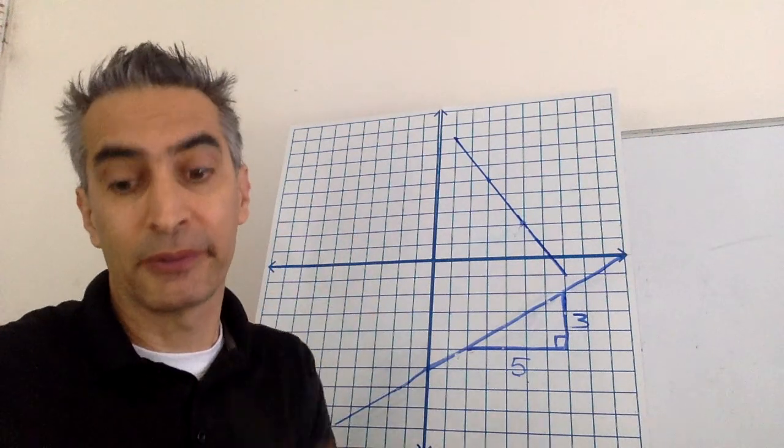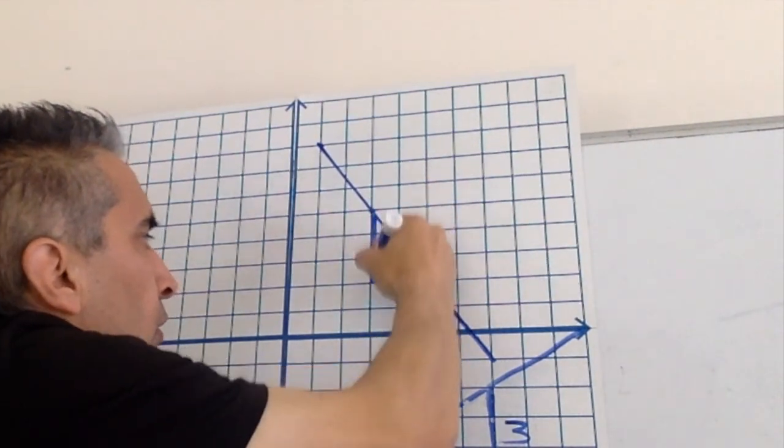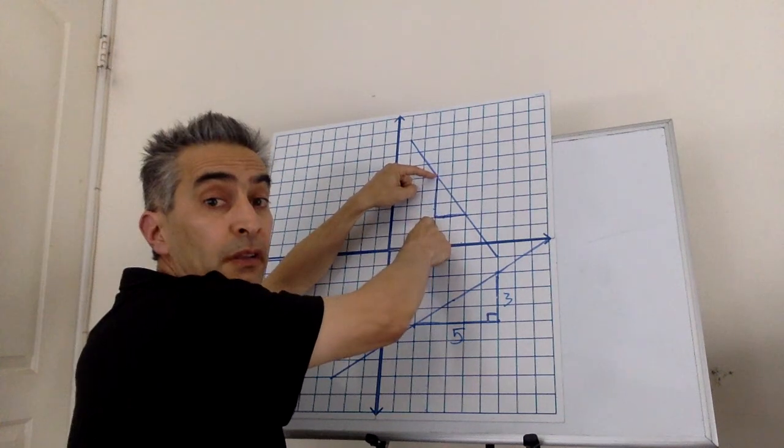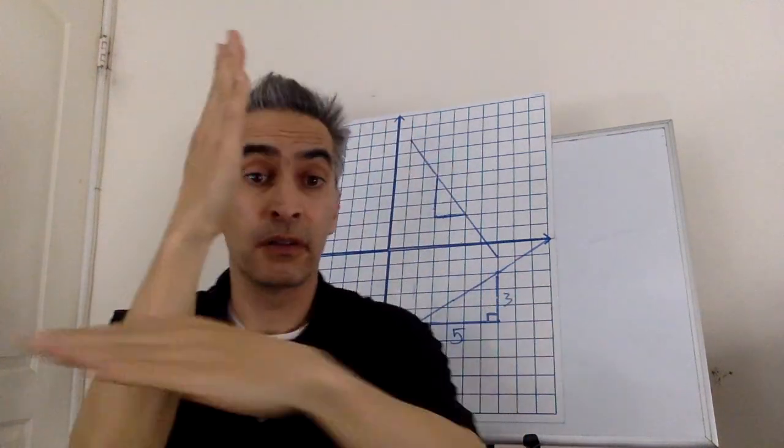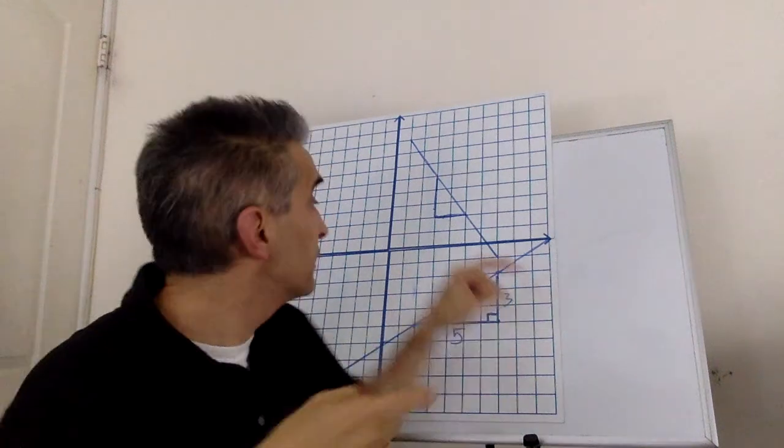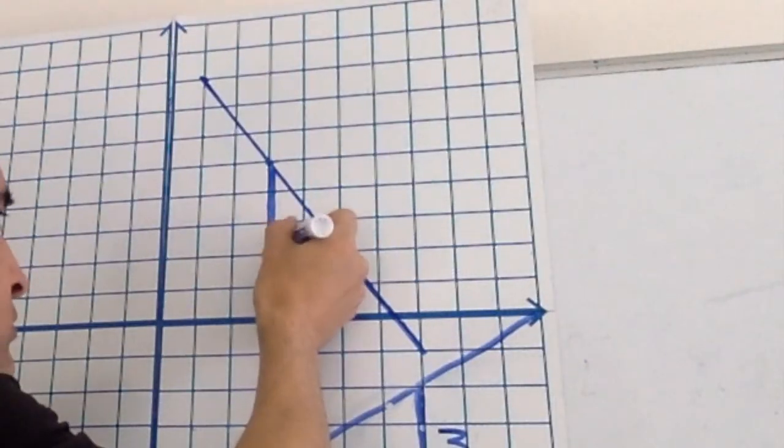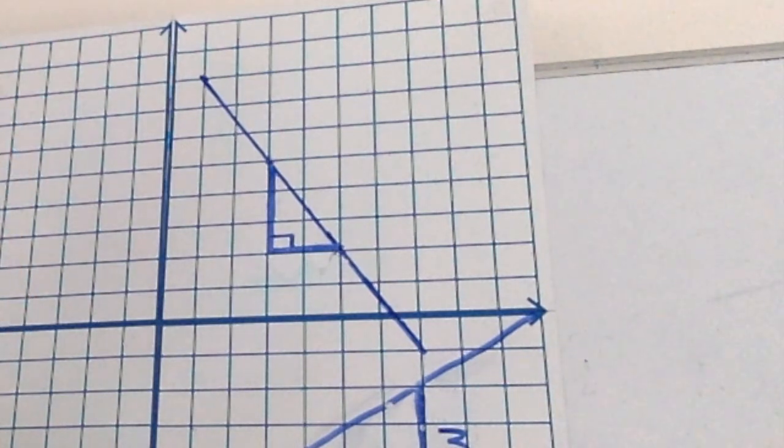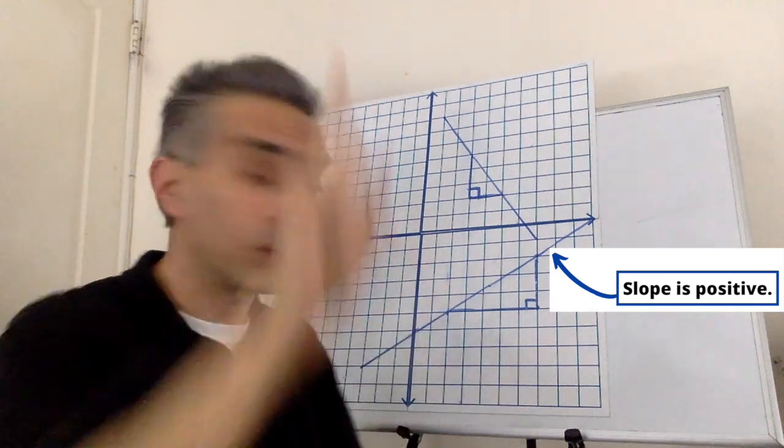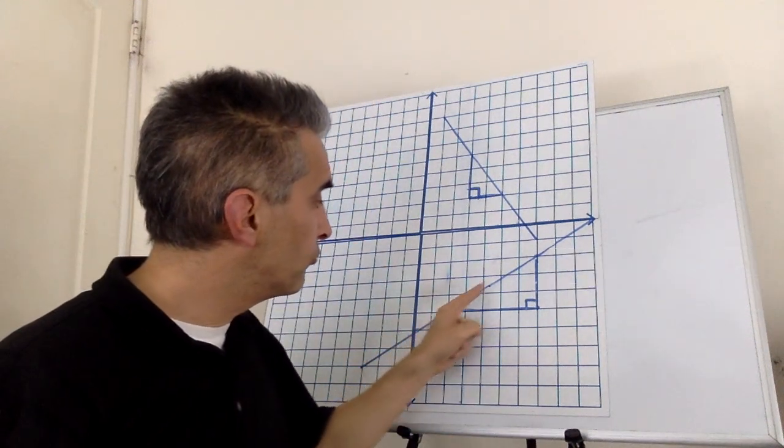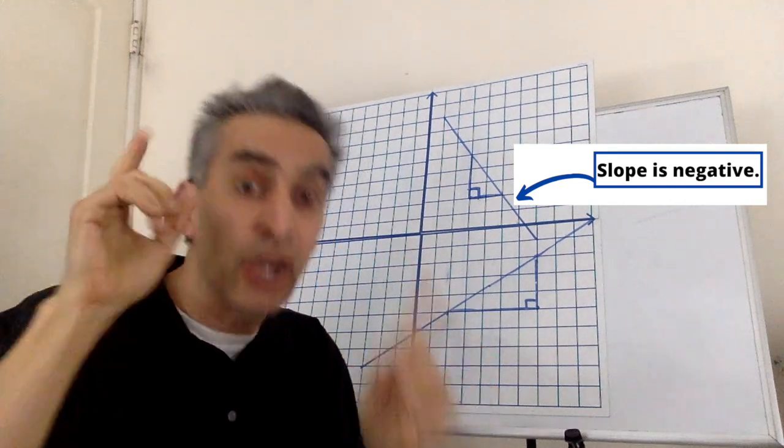Now another example. This vertical height and this horizontal length make a 90 degree angle. Notice this slope is positive because it's going up. Notice that this slope is negative because it's going down.